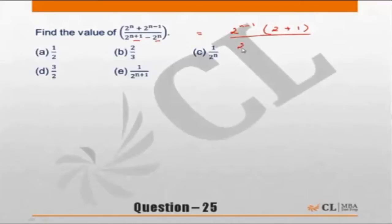So if we take 2 to power n as common, what will be left in the denominator would be 2 to power 1 or 2 minus 1, which is nothing but 1. So 3 upon 1, 2 to power n minus 1 upon 2 to power n.